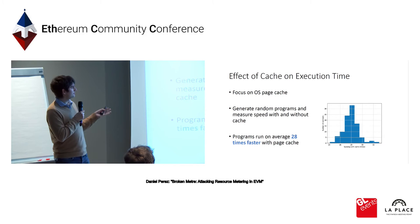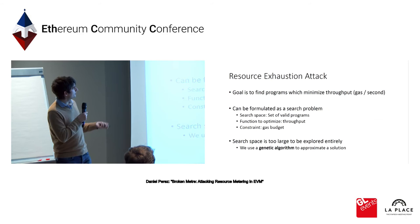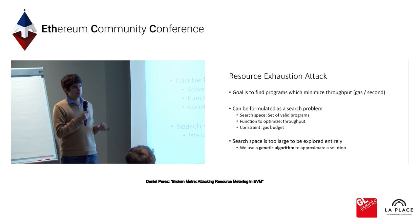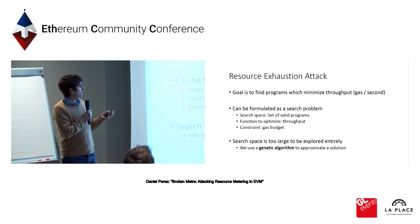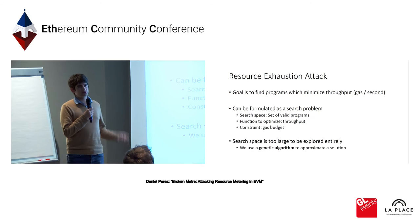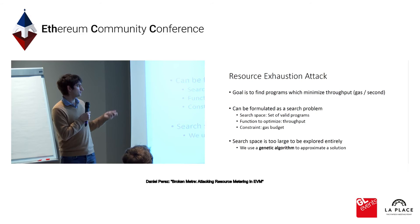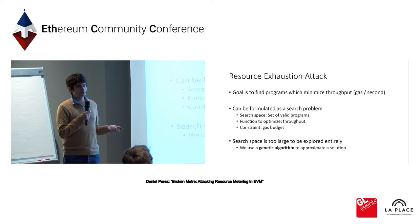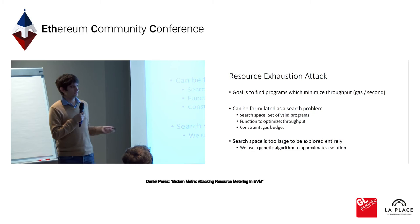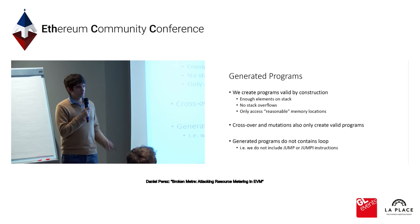From this, the idea was to find programs that abuse this mechanism. We designed what we call a resource exhaustion attack, where the goal is to find programs that minimize the throughput of the EVM — defined as the amount of gas per second the Ethereum virtual machine is able to process. This can be formulated as a search problem: our search space is the set of valid programs, the function to minimize is throughput, and the only constraint is a gas budget. Since the search space is effectively infinite, we used a genetic algorithm to find very slow programs.